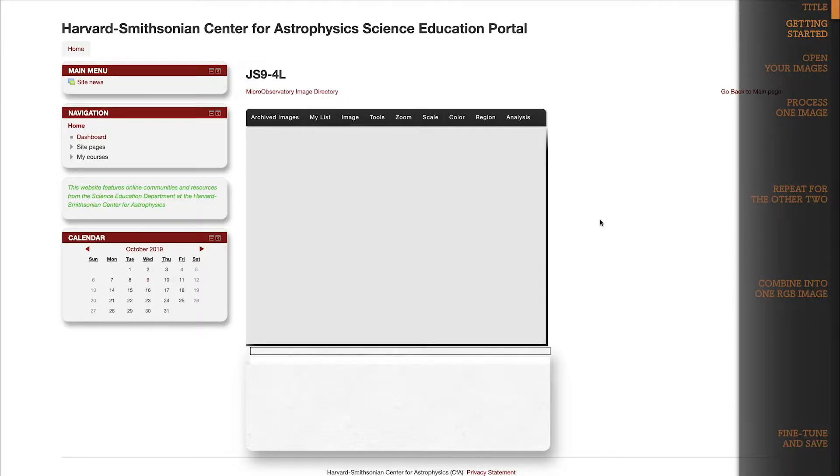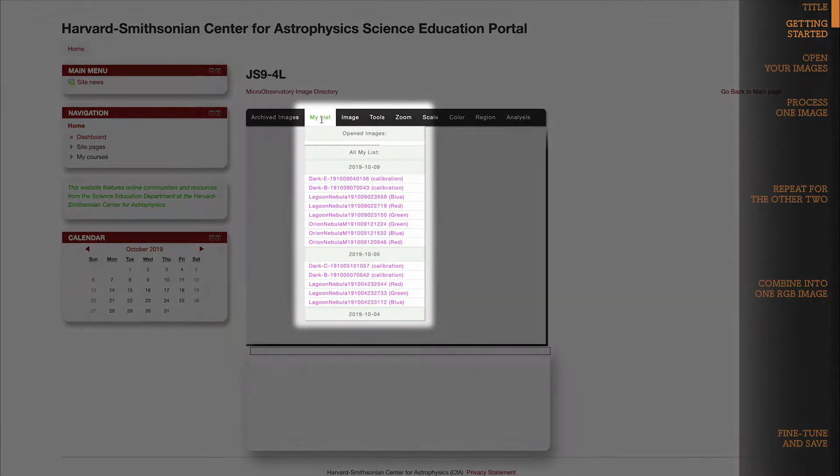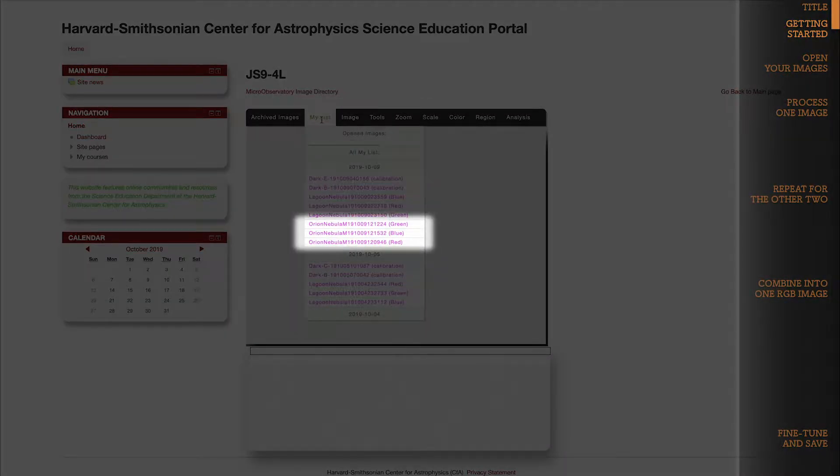Okay, so yesterday I requested three images of the Orion Nebula, and today I'm going to combine them into an RGB image with JS9-4L. You can see the images here in the My List dropdown. One image was taken with a blue filter, one with a green filter, and one with a red filter.